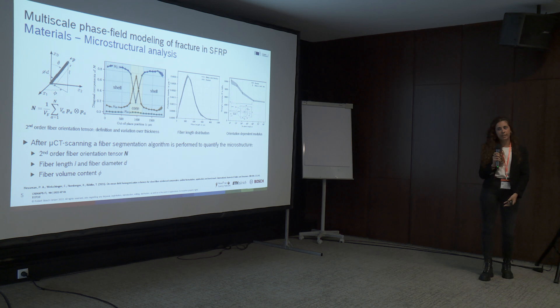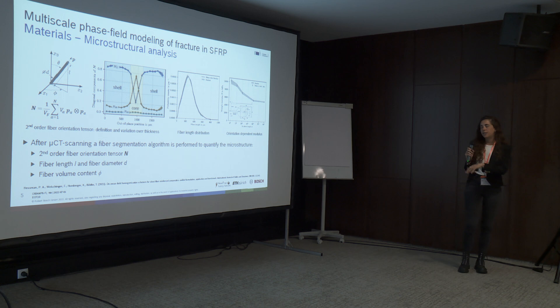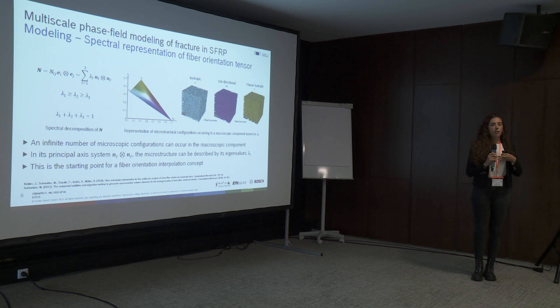We plot the distribution of fiber lengths — the average is around 250 microns. We are also interested in how Young's modulus depends on orientation, so we perform tension tests on dog-bone specimens cut at different angles. Young's modulus ranges from around 11 GPa to around 5 GPa. We are also interested in fiber volume content and fiber diameter.